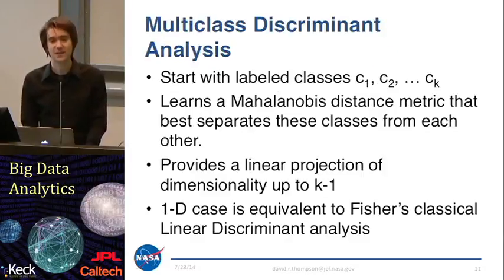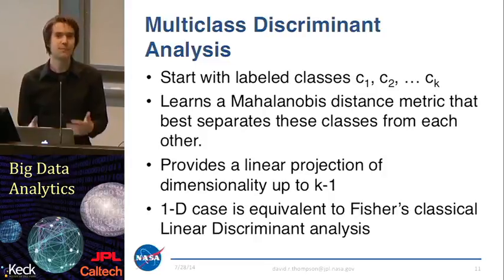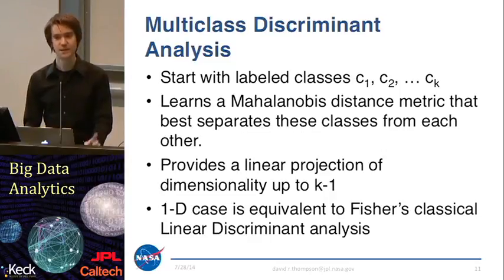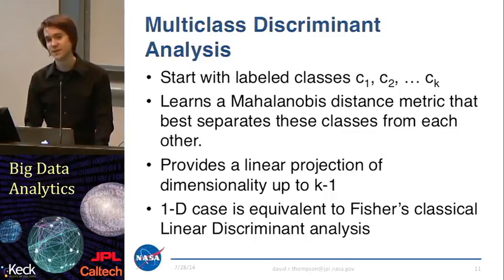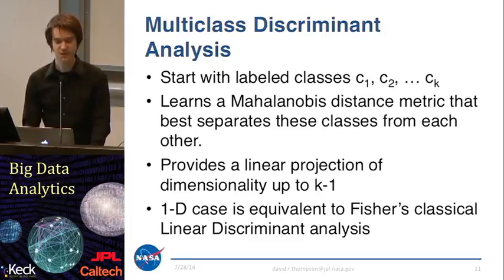Here's our classical approach to metric learning. This is a method that dates back to Fisher — it's multi-class discriminant analysis, a generalization of Fisher's linear discriminant to the case where we have many different classes, up to k different classes. We start with our dataset of data points labeled with up to k different values. The idea is to learn a Mahalanobis distance metric that best separates these classes from each other. The output of this procedure is a linear projection of dimensionality up to k minus 1, so it will also reduce the dimensionality of our input space. With a single 1D case with two classes, that's equivalent to Fisher's linear discriminant analysis.